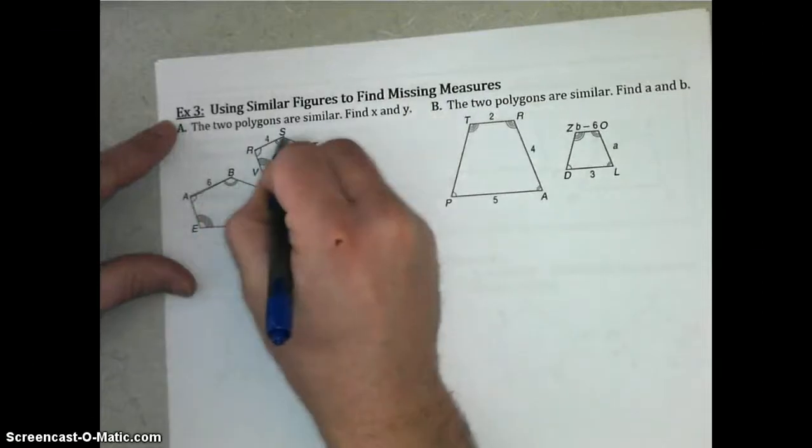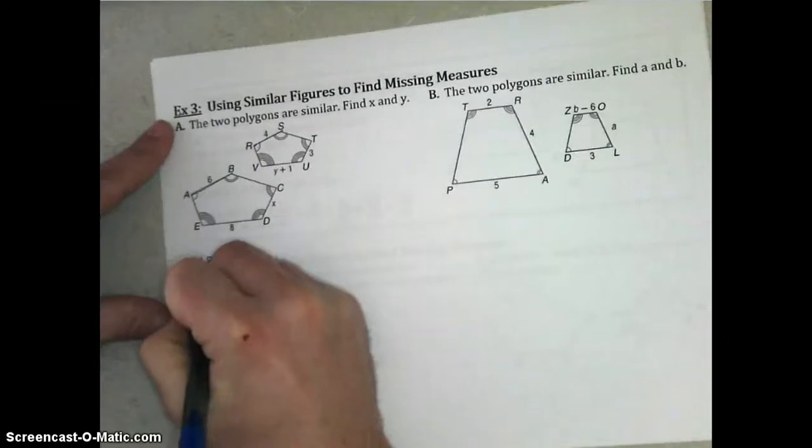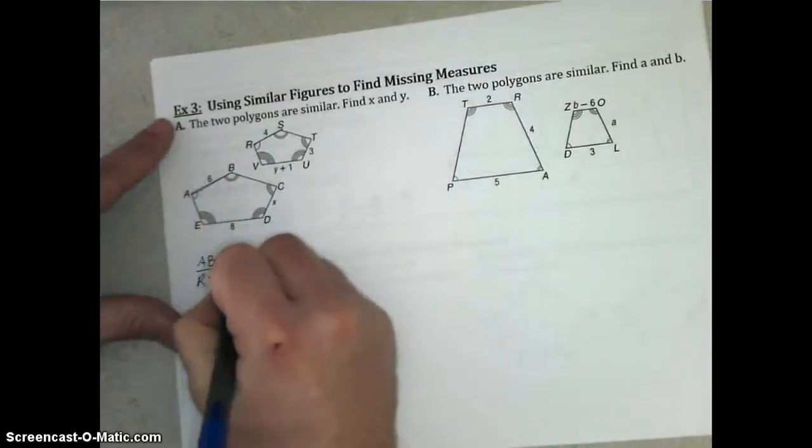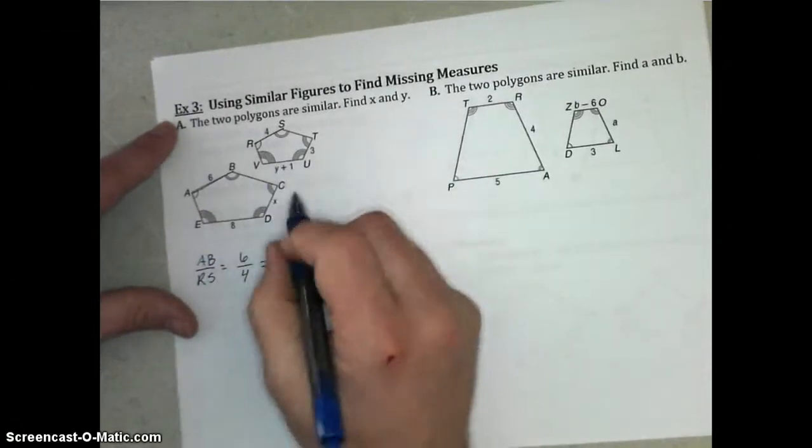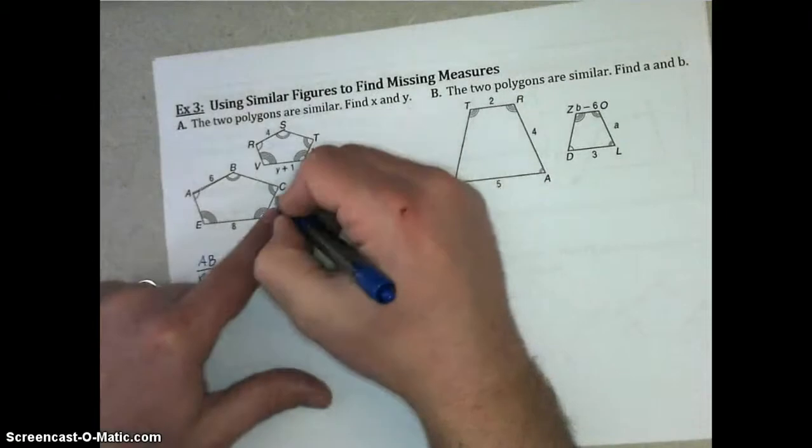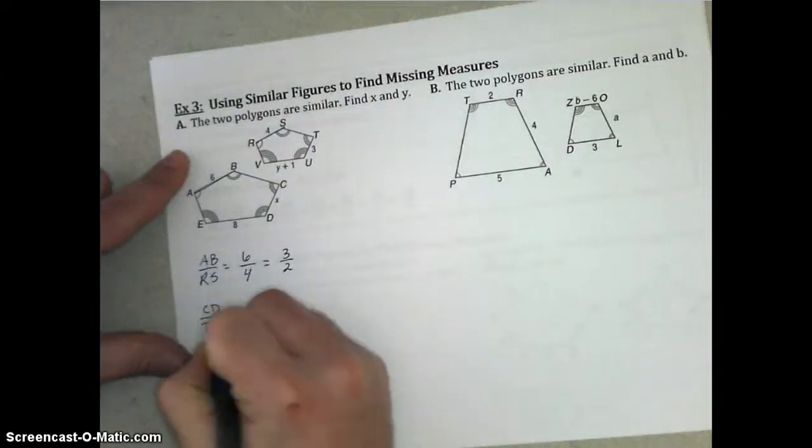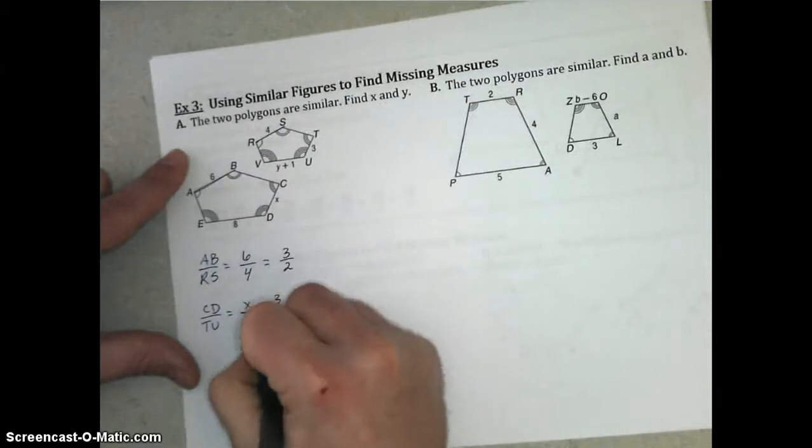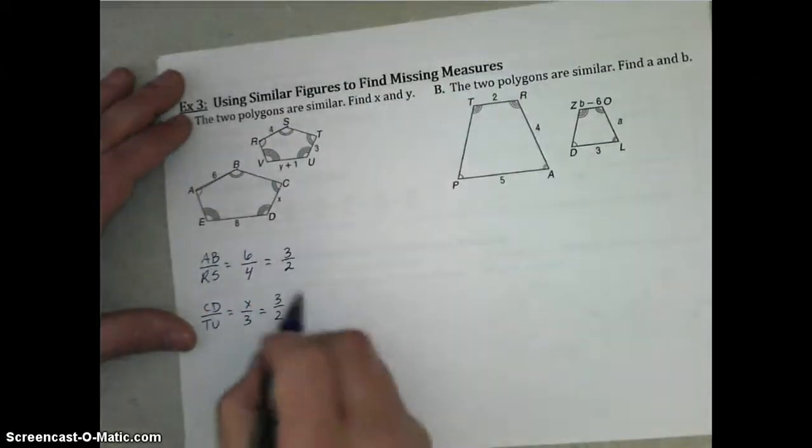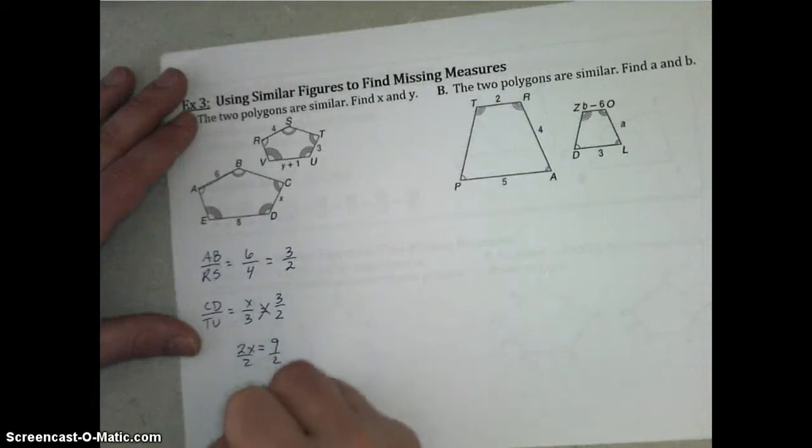So, you'll notice that AB corresponds to RS. So, if I choose that ratio, AB to RS, I should have a 6 to 4 ratio. And we can reduce that, make it a little bit easier on us, so that becomes 3 to 2. So, any other ratio should compare to that. So, when I am trying to find X, it corresponds to TU. So, I'm going to use CD over TU, which would be X over 3, which should be the same ratio as this 3 to 2 ratio that I came up with earlier. And if we solve that proportion, if we look back at our lesson 7-1, we cross multiply to solve. 2X then equals 9. So, X would have to equal 4.5.